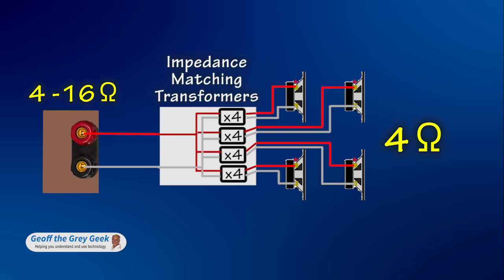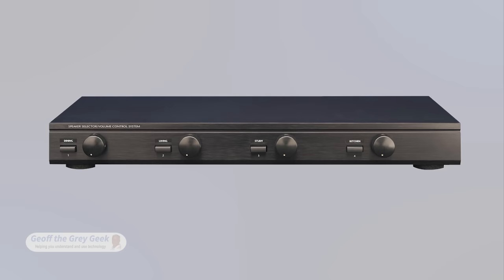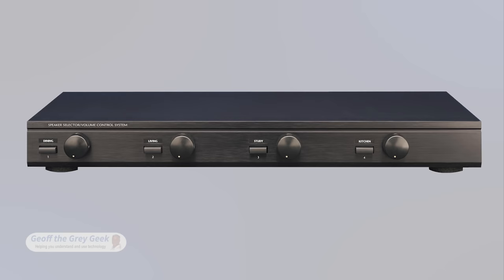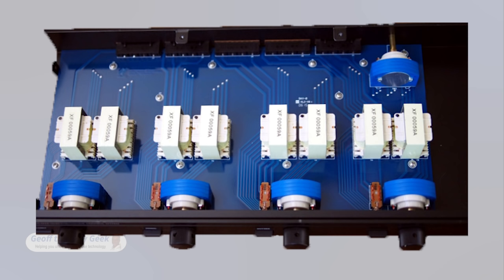Speaker selectors which use transformers for impedance matching look like this. They mostly incorporate individual volume control for each zone. They normally don't need ventilation and don't have a protection switch. Inside there are individual transformers for the left and right channel of each zone. On the rear of some there is a multiplier switch, which you set during installation.